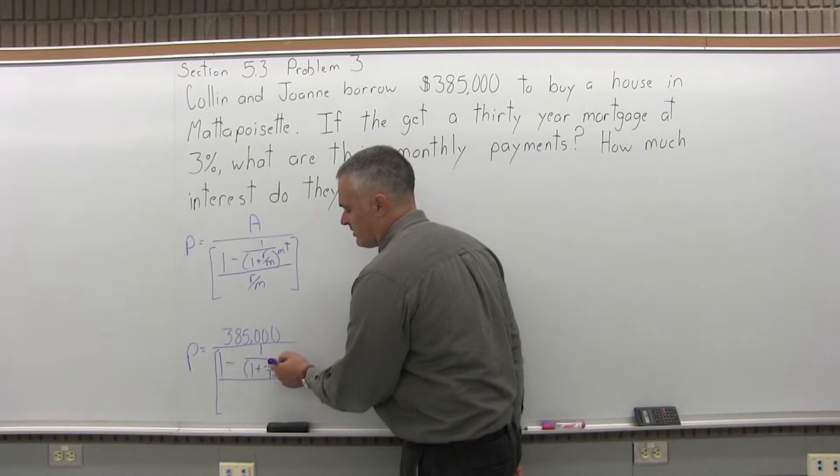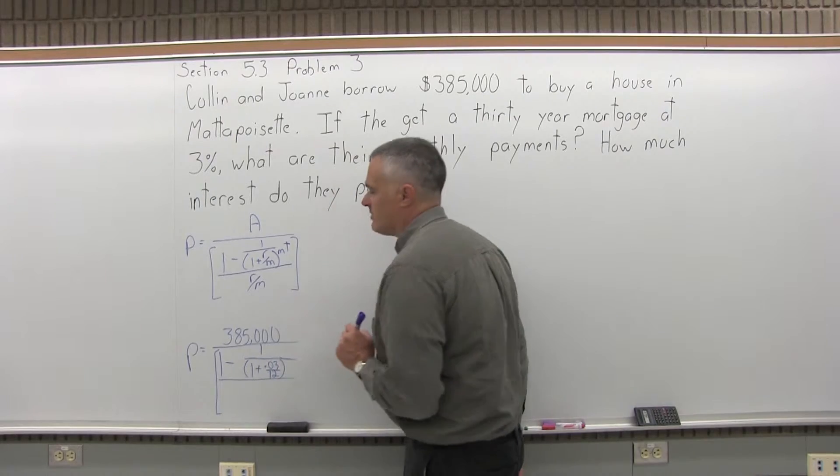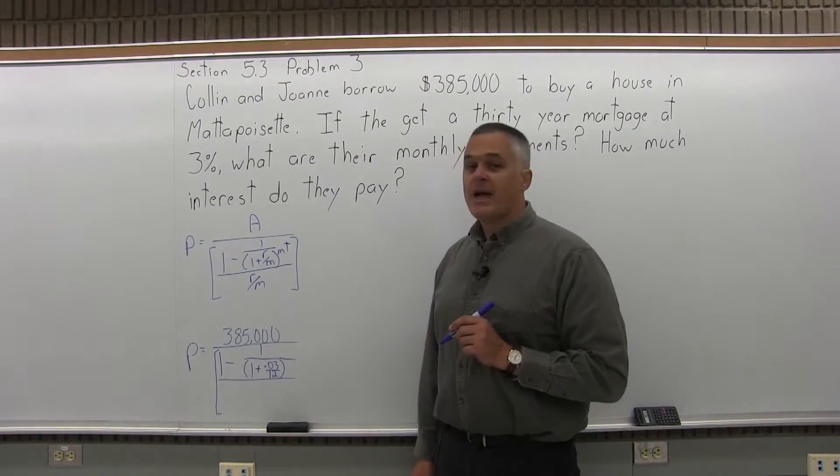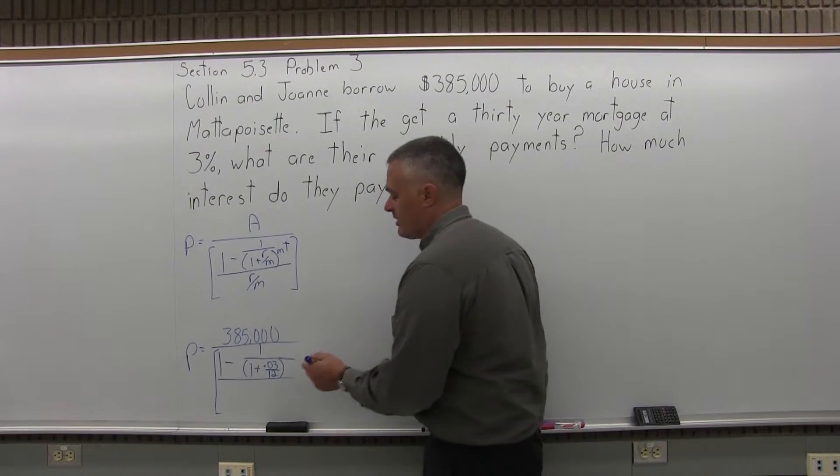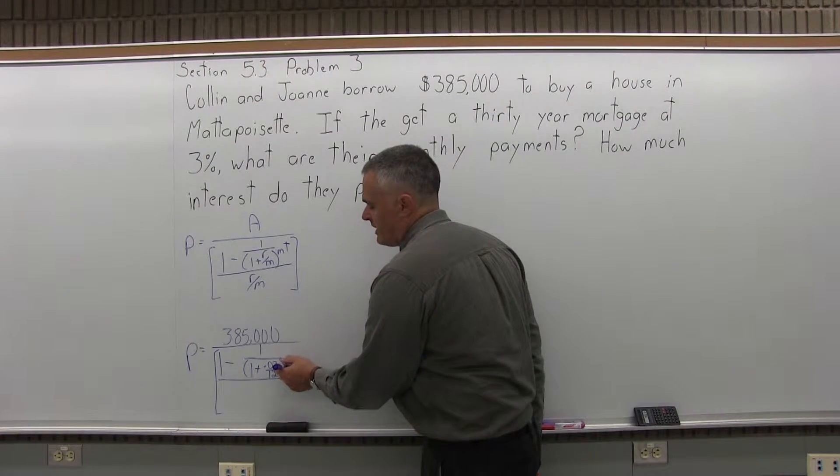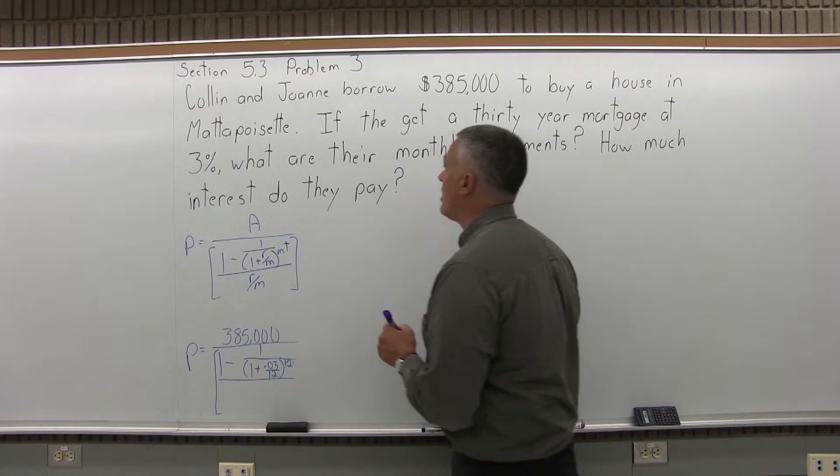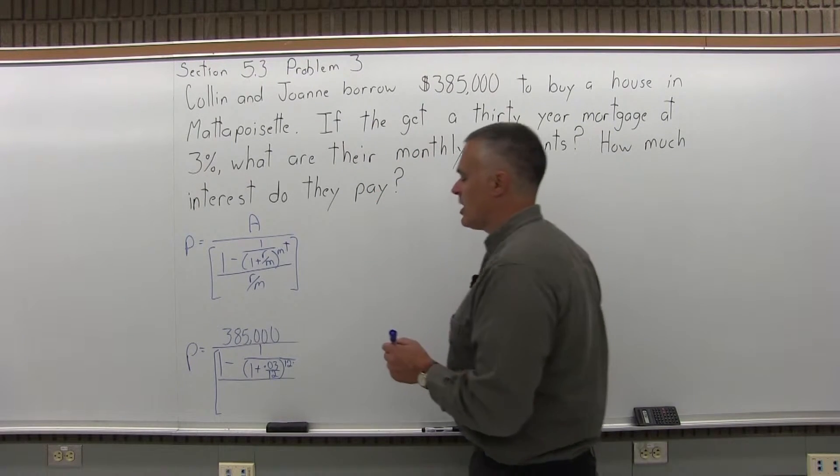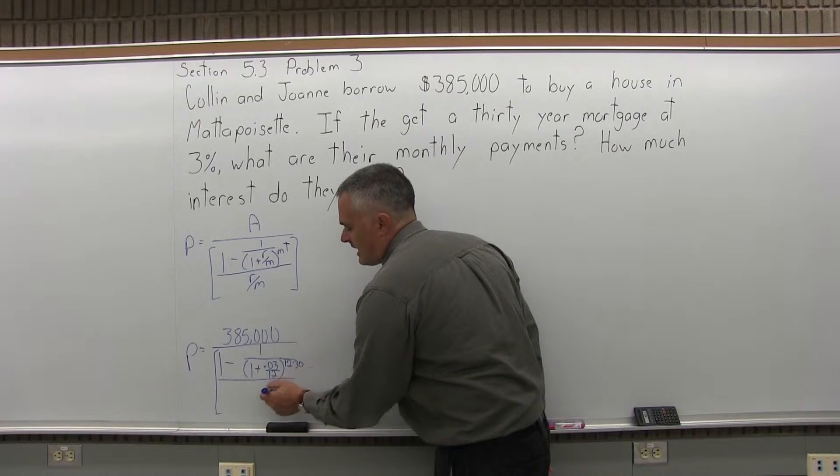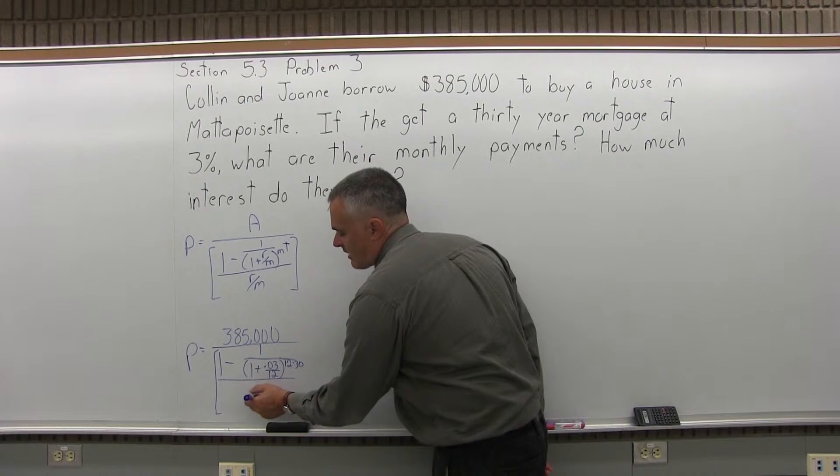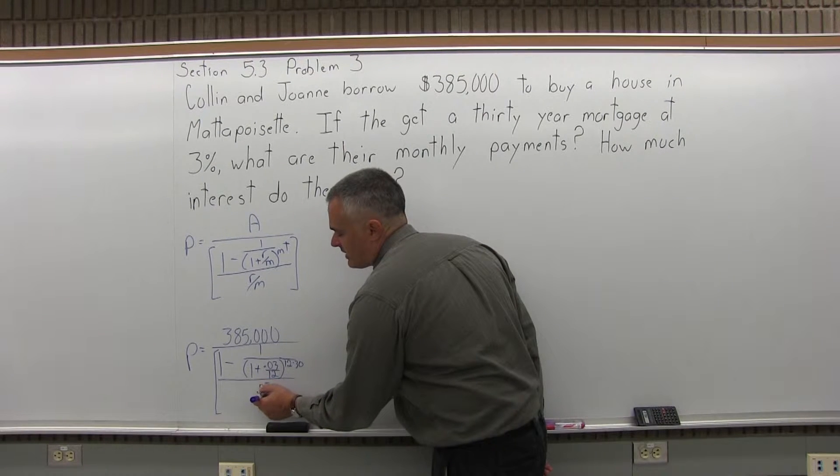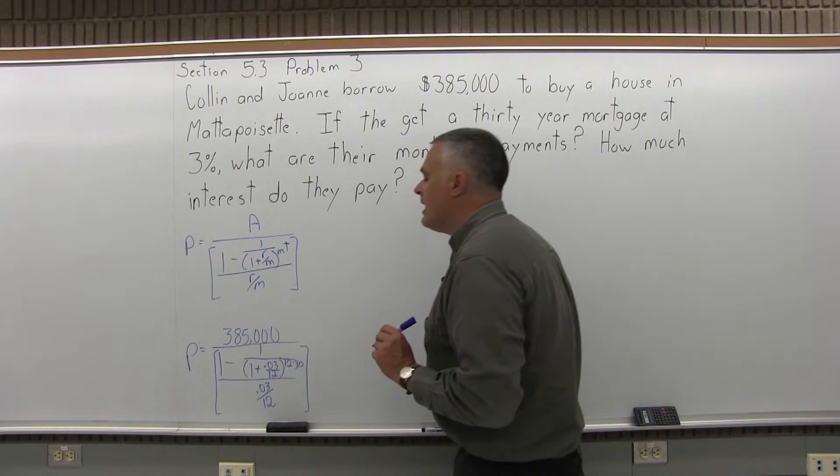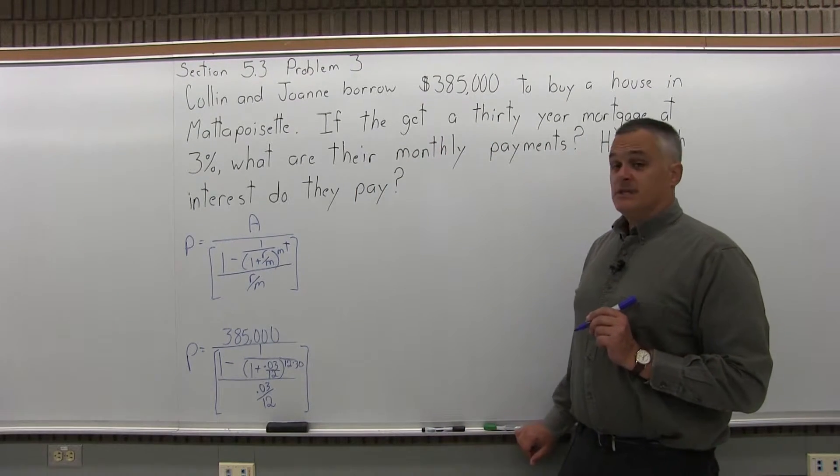This is very common for a loan. And that 1 plus R over M has an exponent of M times T. M number of payments per year is 12, T number of years for this problem is 30, because they have a 30-year mortgage. Again, that's probably the most common type of mortgage. And in the denominator of the brackets, R over M again, .03 for the R, and 12 for the M. Close the brackets. And that's how the formula fills in.